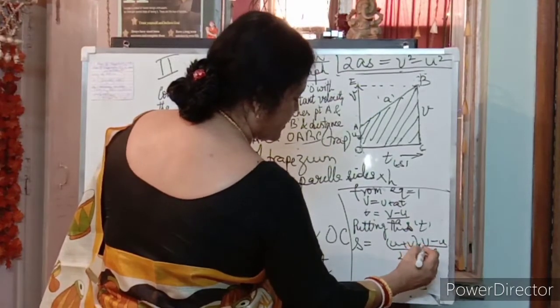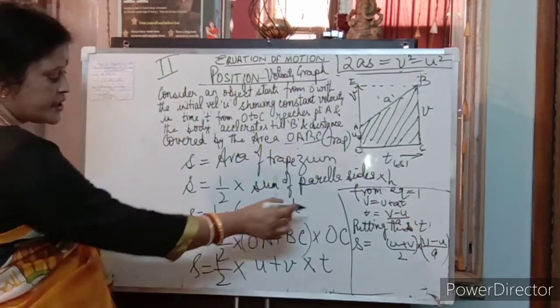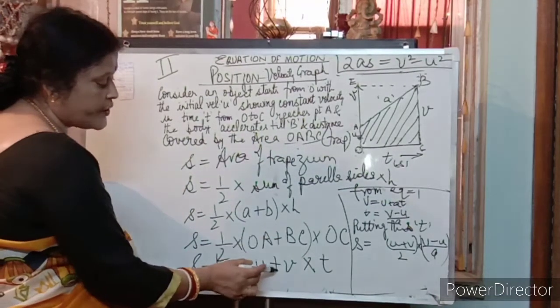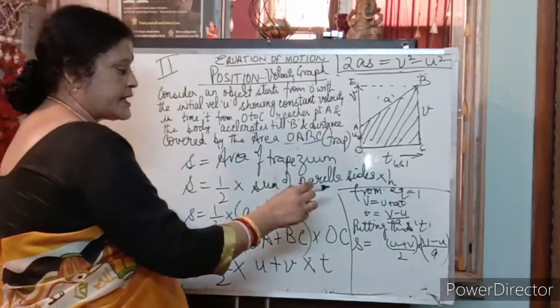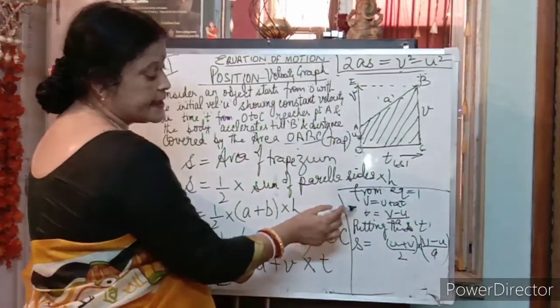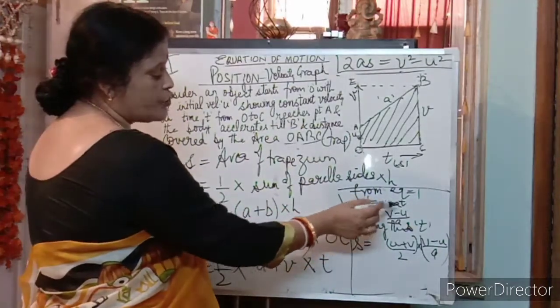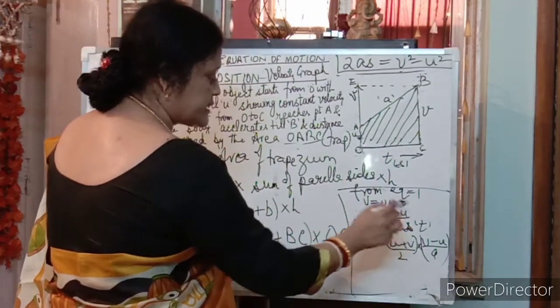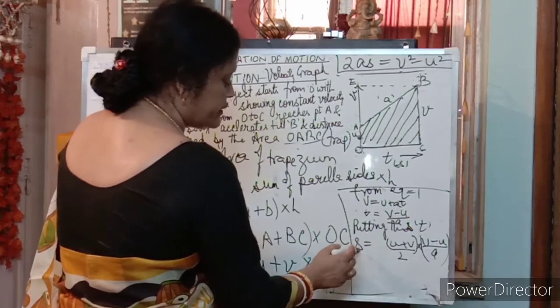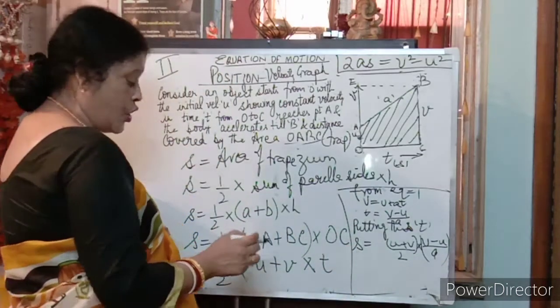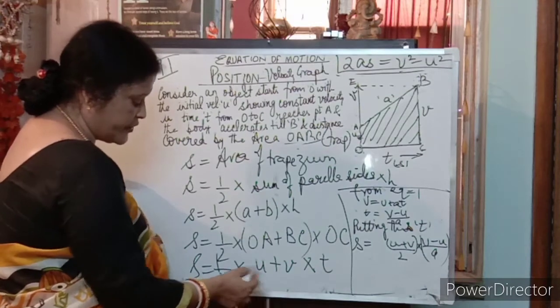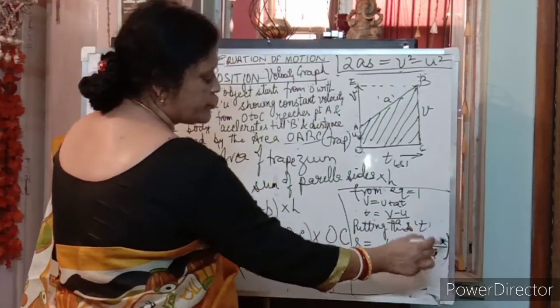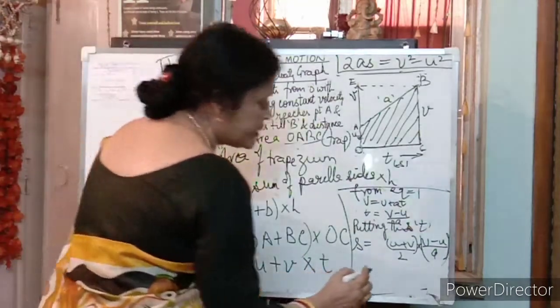Again, I am repeating. Putting these values. Substituting these values. O, A is U. B, C is V. And O, C is T. From equation 1 that is V is equal to U plus A T. T is equal to V minus U upon A. Putting the value of T. Putting this T value in this equation. So aapka kya ho jayega? Ab U plus V upon 2. T ki jagah maine kya likh diya? V minus U upon A. Bas, ab hum interchange karenge. To A S, is side layout.